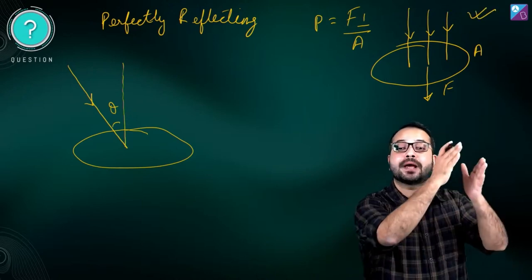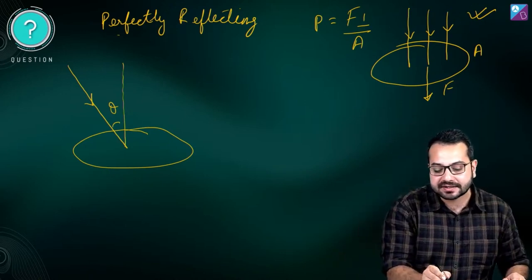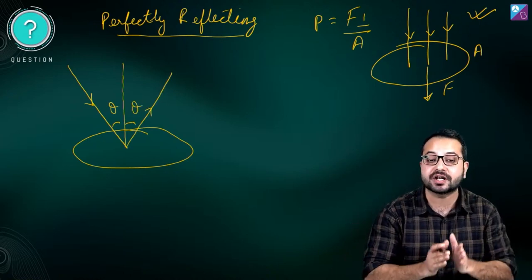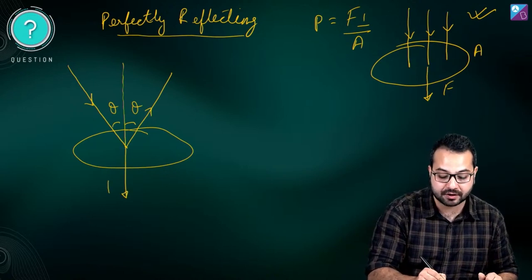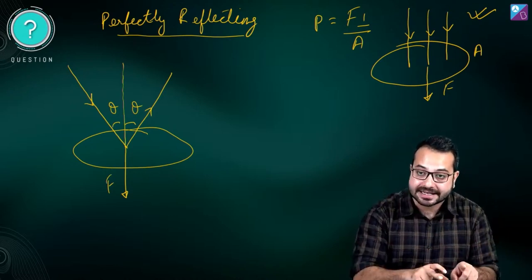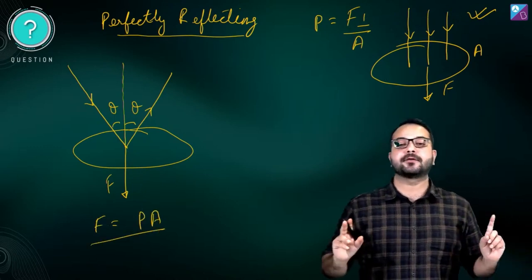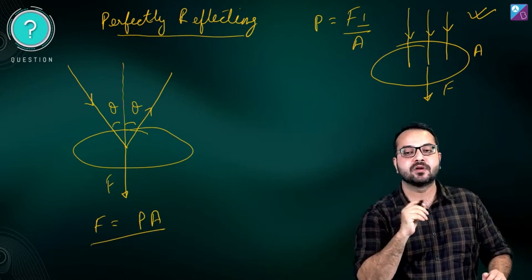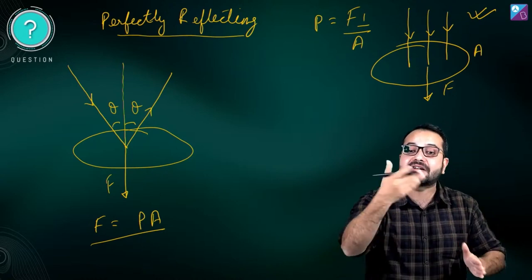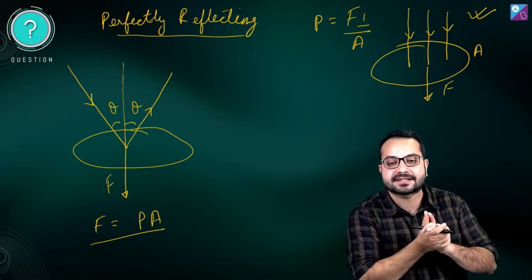Now, for light falling at an angle on a perfectly reflecting surface: the light reflects, and the change in momentum is in the upward direction — perpendicular to the surface. So the force exerted is again perpendicular to the surface. In this case also, force equals pressure × area. No component needs to be taken.